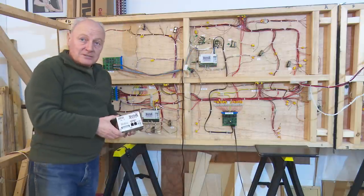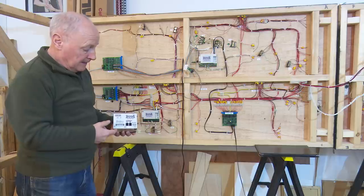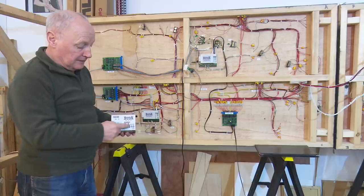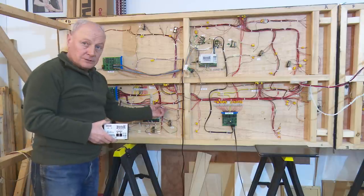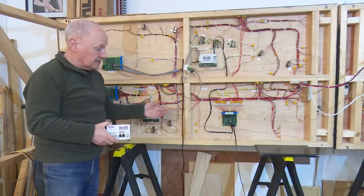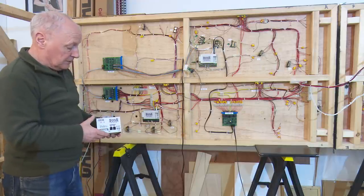This is the DCS-100 and this is the main brains behind the Digitrax system. Your controller will go in here and then the other opening takes a cable like this onto the layout and it's called LocoNet.